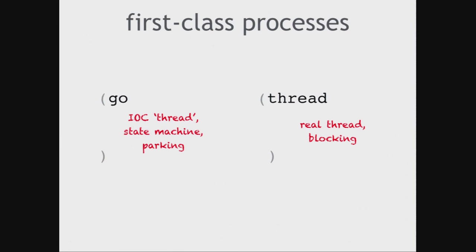One of them is called Thread. Thread is available on platforms that have real threads, and it uses a real thread to implement the process. Go is available in places that do not have threads. Go rewrites your program internally to allow you to write sequential code in this block, and it will schedule pieces of it onto whatever is available on your platform. If you are running on a platform with threads, Go will use a thread pool. If you are running on a platform without threads, it will do magic callback hell behind the scenes to schedule all this, and then you write all your code forgetting that that stuff exists.